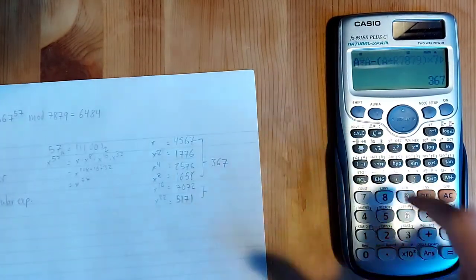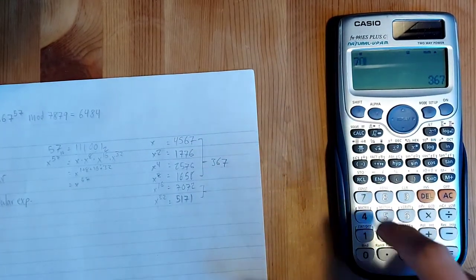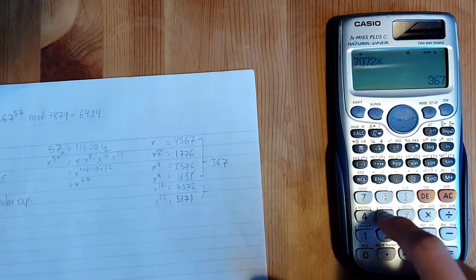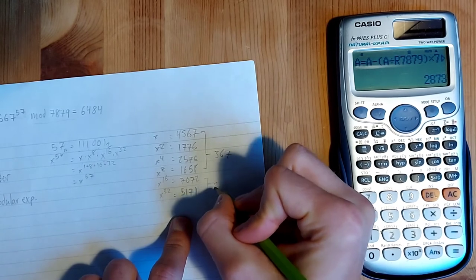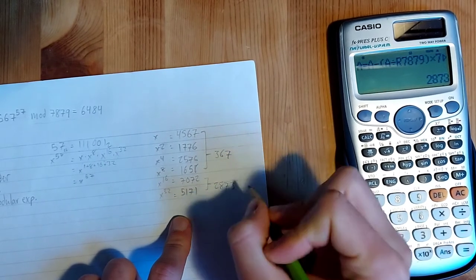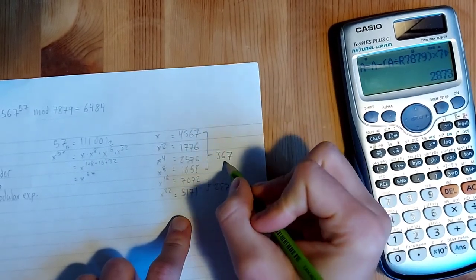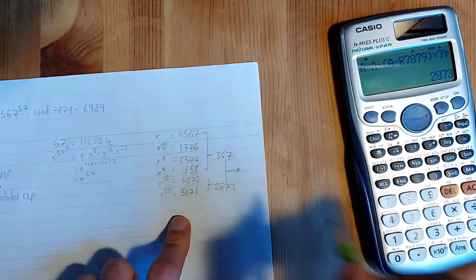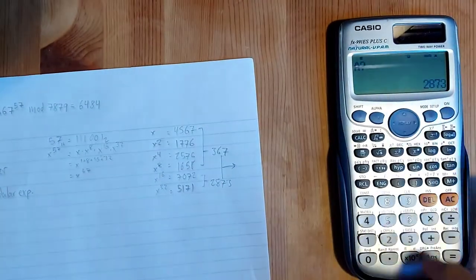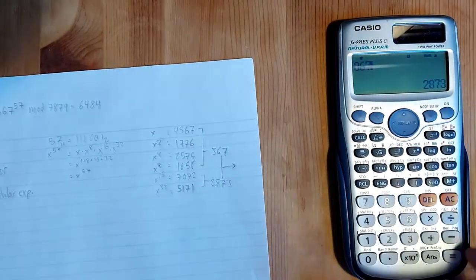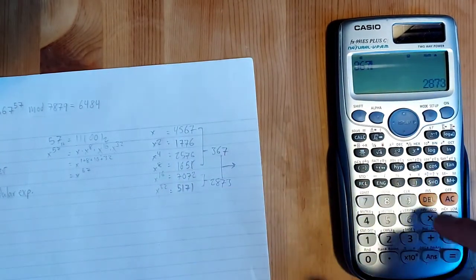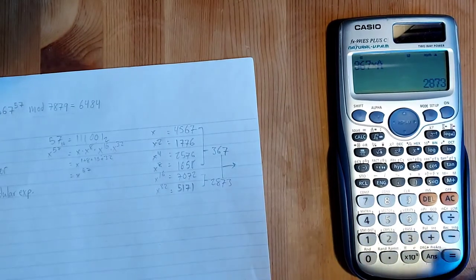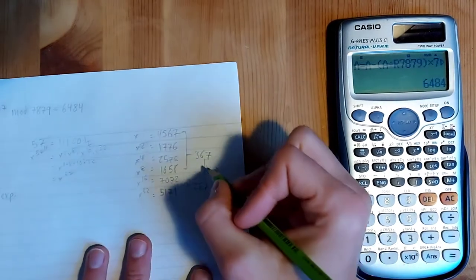And then I'm going to do this multiplication and take that mod whatever. And then I'm going to multiply these two results together. So 4567 times 1658, and we get 367. And then calc, 7072 times 5171, we get 2873. And then now we can multiply those two together. So I can do 367 times recall A and get 6484.